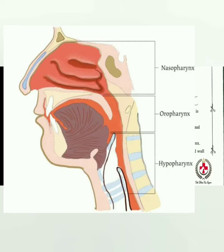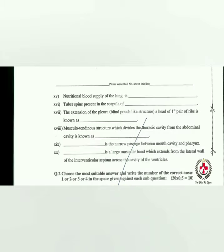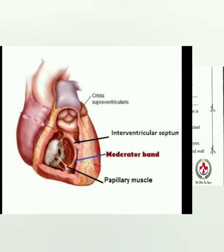The narrow passage between the mouth cavity and pharynx is the oropharynx. The larger muscular band which extends from the lateral wall of the interventricular septum across the cavity of the ventricle is the moderator band — this will also be clear in the picture.